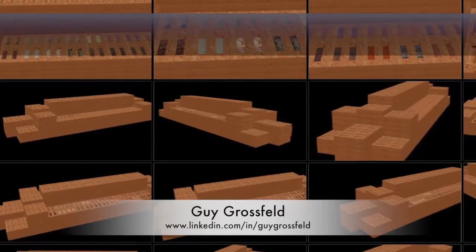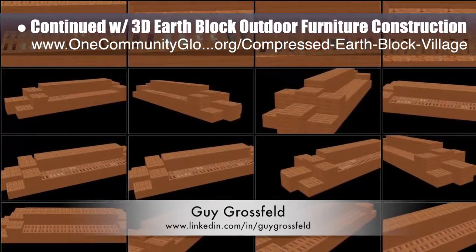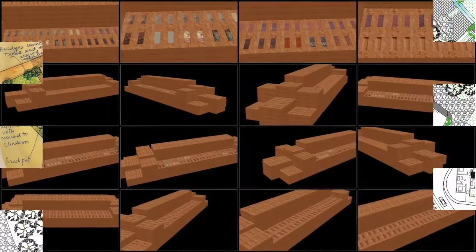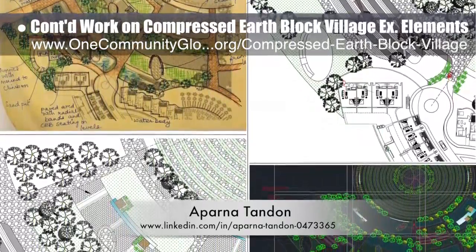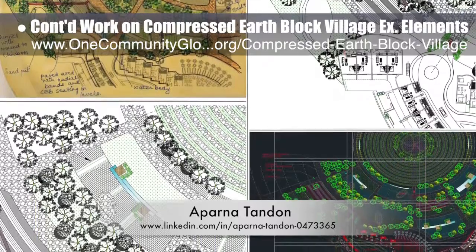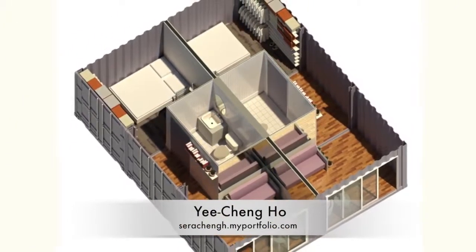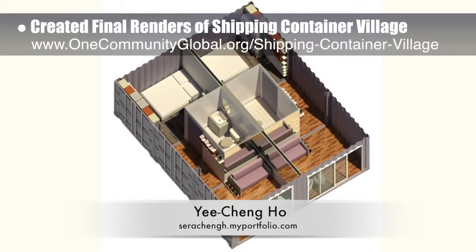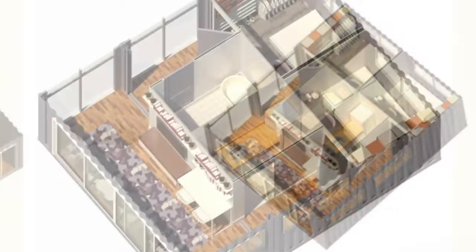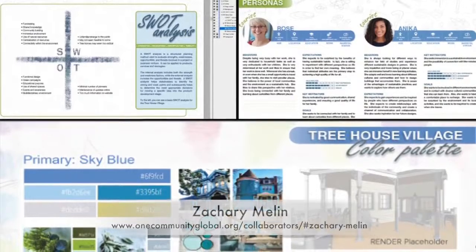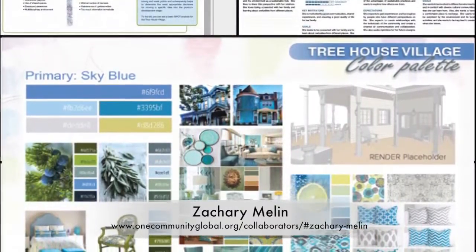Guy Grossfeld, graphic designer, continued with 3D EarthBlock outdoor furniture construction for the compressed EarthBlock Village Pod 4. This is his 10th week of work, focused on creating and testing different textures to fill in the empty spaces on the top of the compressed Earth bricks. Aparna Tandon, architect, continued her work on the compressed EarthBlock Village external elements — her 5th week focusing on the landscape and layout details for the east play area and one of the central recreation spaces on the north. Yi Cheng Ho, interior designer, finished her 7th week helping with the shipping container village renders for the living units, showing how to convert the unit design into two 2-bedroom designs for do-it-yourself home construction. Zachary Moline, graphic designer, continued developing the Treehouse Village Pod 7 book — week 11 of this work, updating all page colors to match the new color palette and creating the color palette page itself.